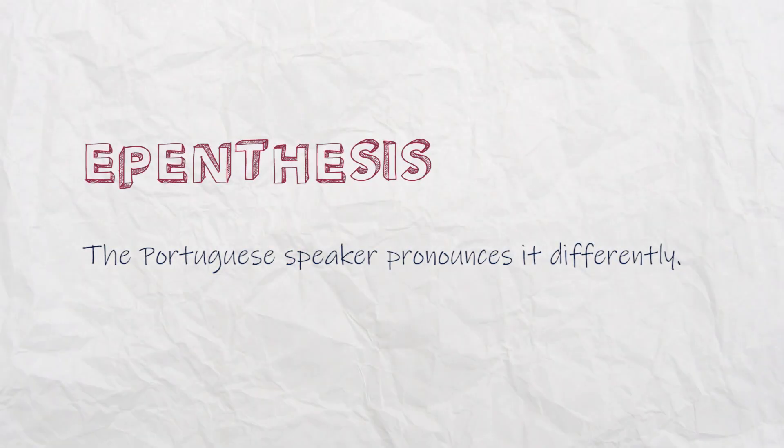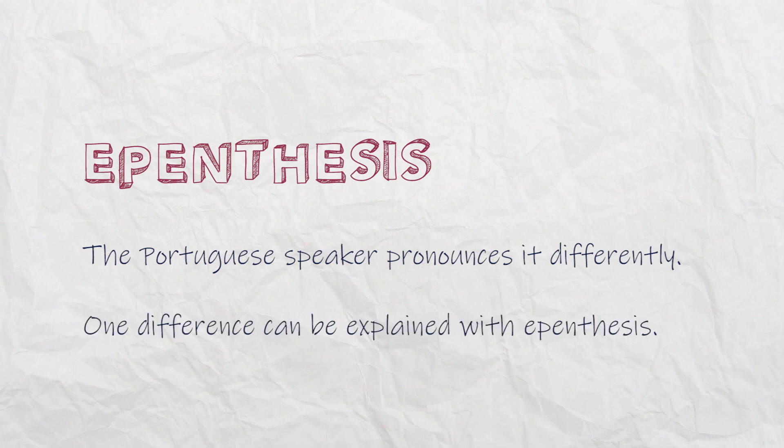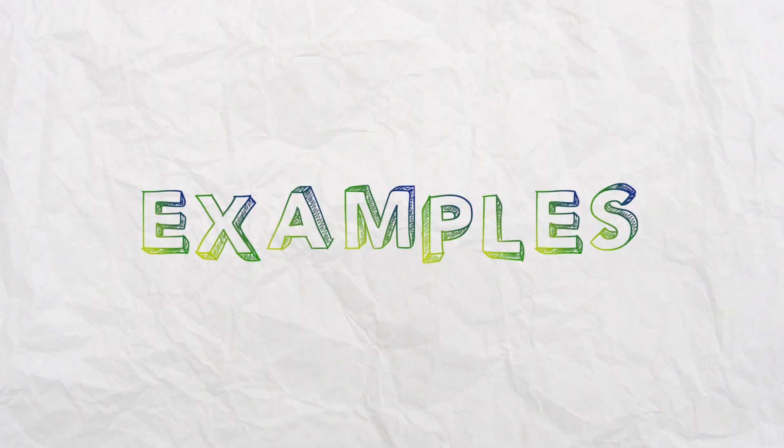When a word is borrowed from English into Brazilian Portuguese, it is very likely that the Portuguese speaker is going to pronounce it differently. One of the differences we can use to explain these different pronunciations is epenthesis. It means that when Portuguese speakers borrow a word from English and want to pronounce it their own way, they epenthesize a sound. Let me give you examples.